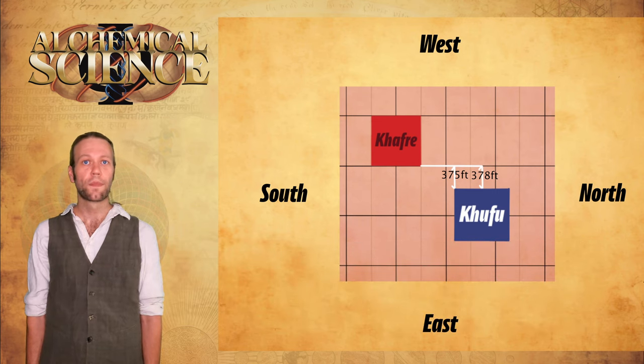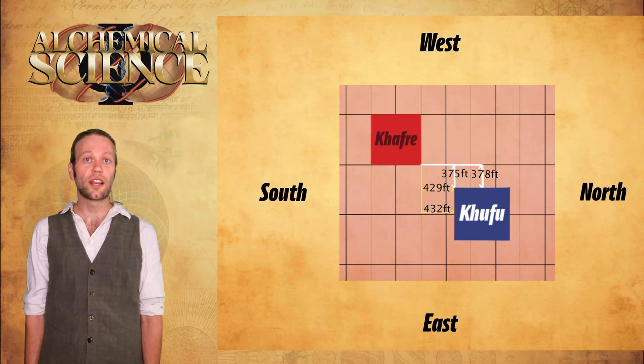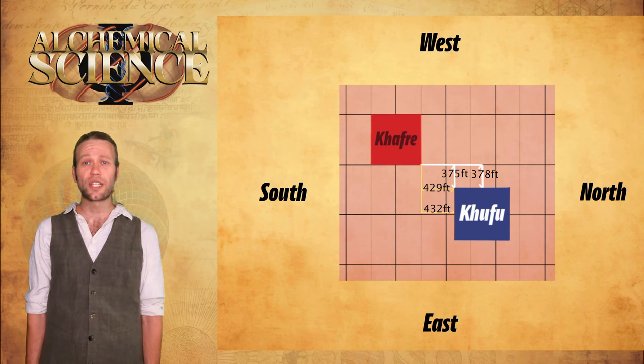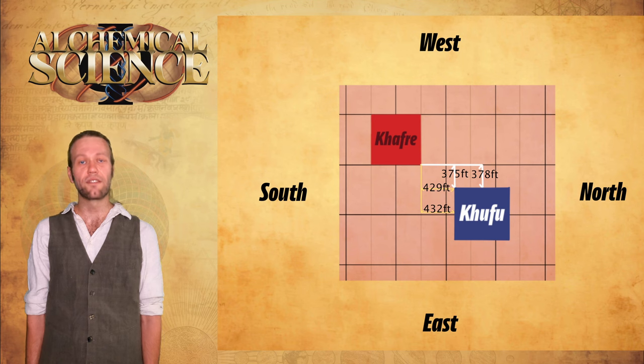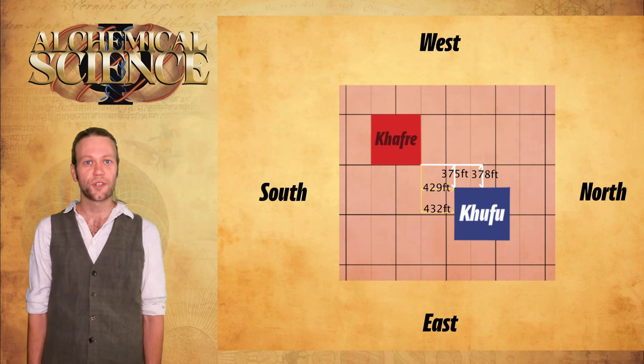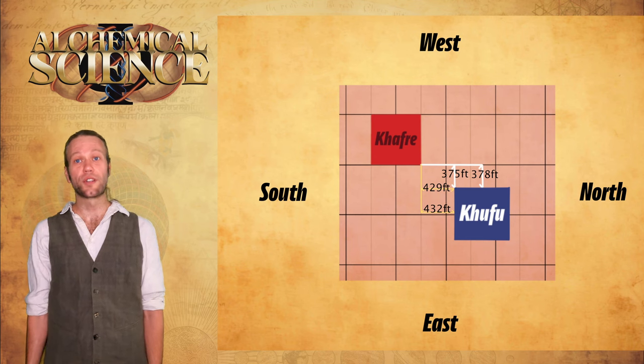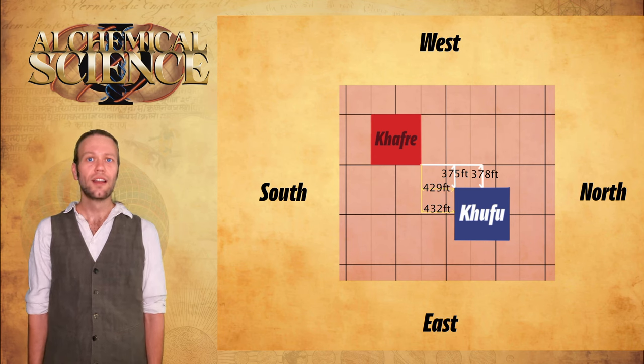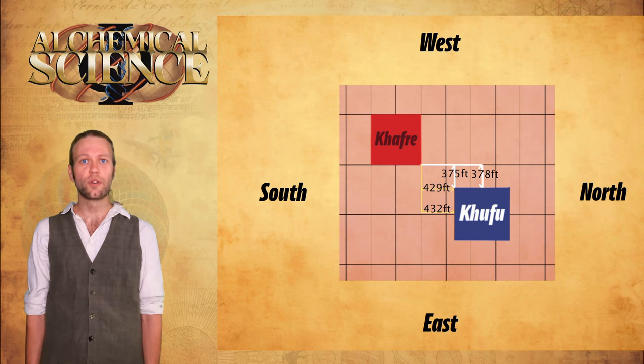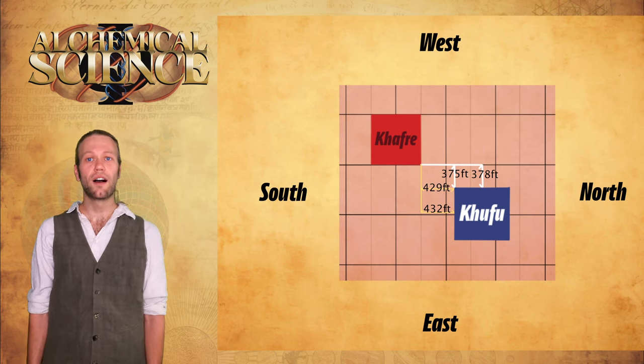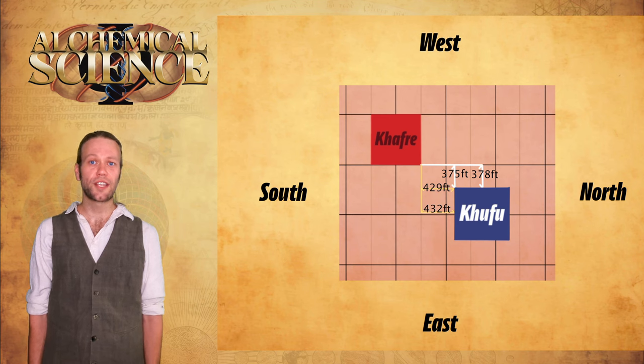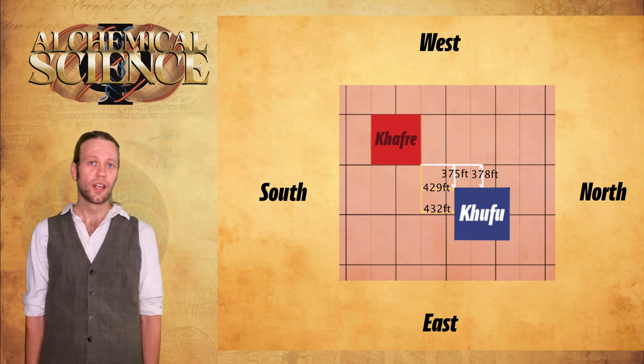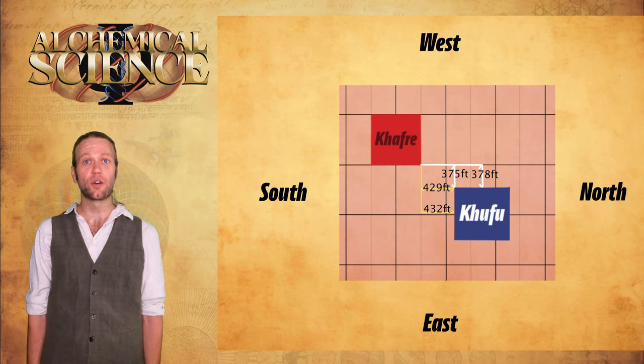378 feet is also half of Khufu's outer base length, 756 feet. On the horizontal axis, the center line of the base of Khufu is located 432 feet from the northern face of Khafra. The extended outer corner then being located 429 feet from the northern face of Khafra on the horizontal axis. Another note here is that if we add 375 and 378 together, the two dimensions we determined earlier are to plot Khufu, this will equal 753 feet. If we multiply 753 by 12, we get 9036 inches again. Divide 9036 by 360, and this equals 25.1 inches. 25.1 inches being the measure of the sacred cubit.